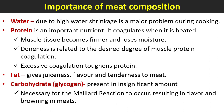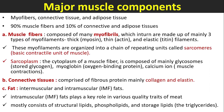Excessive coagulation toughens protein. Fat gives juiciness, flavor, and tenderness to meat. Carbohydrate or glycogen is present in insignificant amounts in meat but is necessary for the Maillard reaction to occur, resulting in flavor and browning in meats.